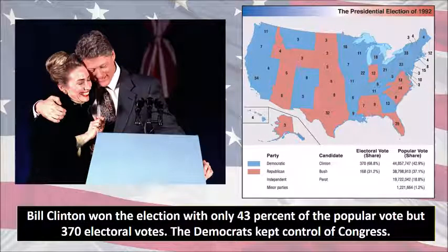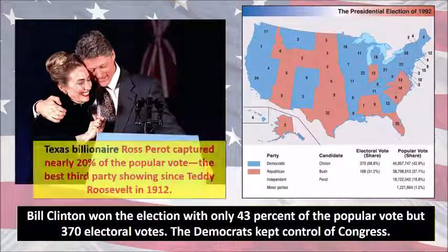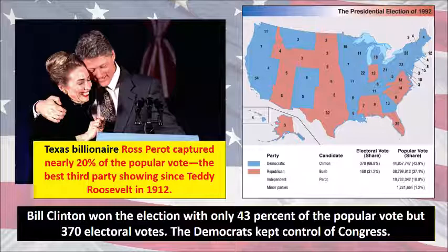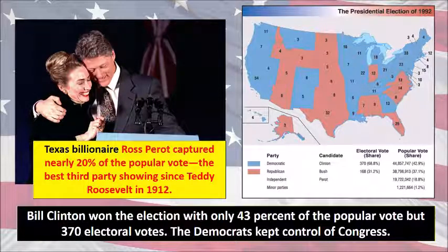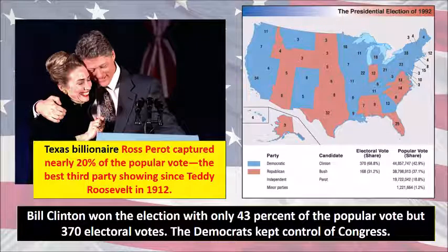Clinton won over 370 electoral votes, and Democrats were in control of Congress. Billionaire Ross Perot was the most successful independent candidate since Teddy Roosevelt's Bull Moose Party back in 1912, winning nearly 20 percent of the popular vote — a pretty interesting moment.